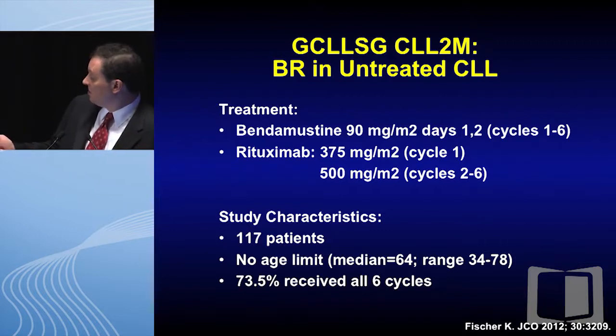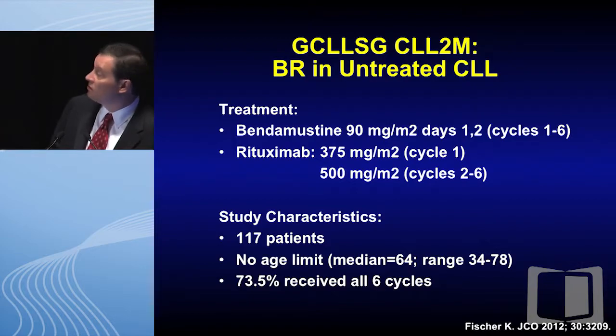The treatment regimen for the BR clinical trial used bendamustine 90 mg/m² on days one and two, with rituximab 375 mg/m² cycle one and 500 mg/m² cycles two through six. I'd like to point out that the dose of bendamustine is a moving target — we see patients getting anywhere from 90 to 120 mg/m² based upon the approval package. In relapsed disease, doses as low as 60 mg/m² are used, so the dose of bendamustine is certainly a moving target.